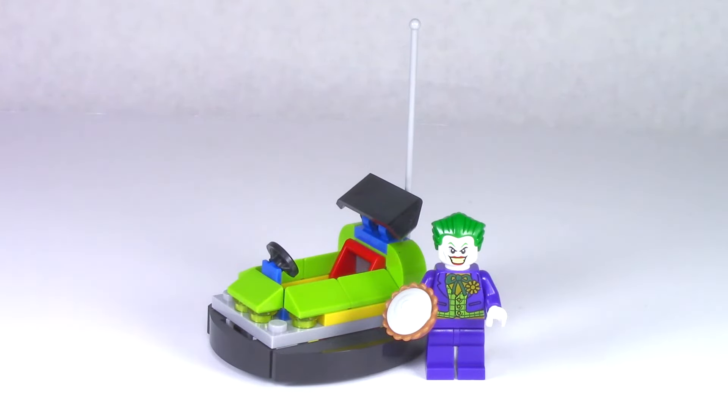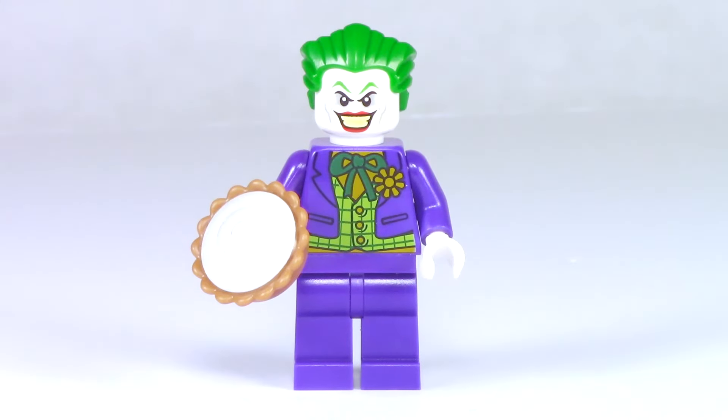But before we get too far into the set, let's talk about everyone's favorite part, the minifigure. Here we have the Joker from the front. You can see he's got that great suit print that we've gotten in other sets, and I really love that maniacal grin.